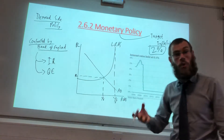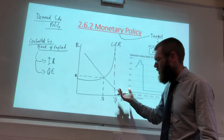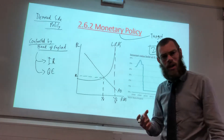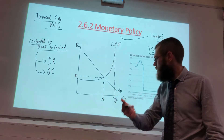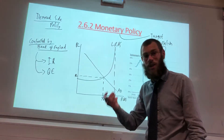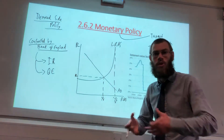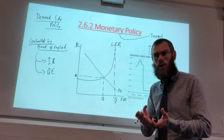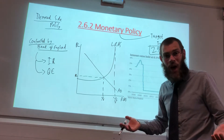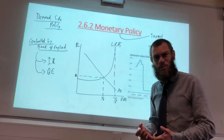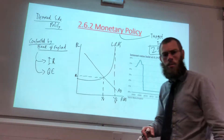Interest rates directly affect aggregate demand. Consumption and investment are both directly affected by interest rates: the lower they are, the more likely we as consumers and firms are going to borrow money and buy. The lower the interest rate, the less benefit from saving, so there's more incentive to go out and spend our money.